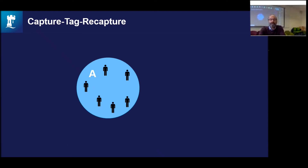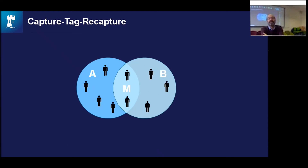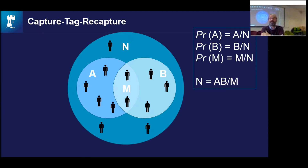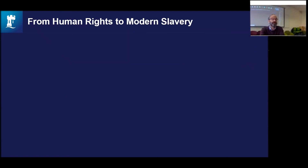It uses capture-tag-recapture methodology. If there are two sources, A and B, that have reported slavery practices, some cases are exclusive to A, some exclusive to B, and some are shared — which we call M. From the analysis of the ratio of probabilities of people reporting into these different sources, we can estimate the total number of slaves, represented by N. There are also stories that never appear — those never caught — which we call the dark figure. This methodology allows us to estimate both the slaves we know about and those we do not yet know about.